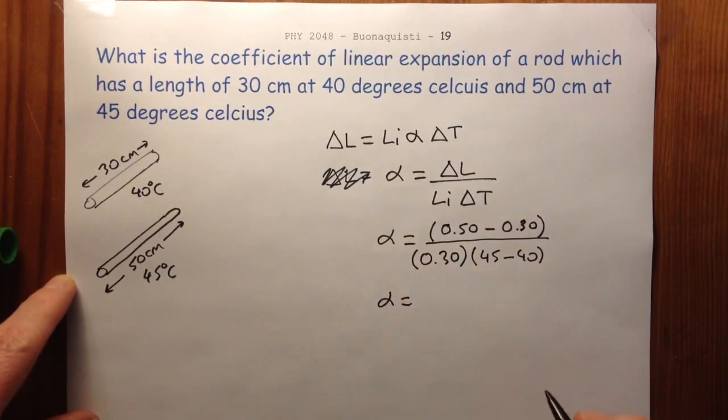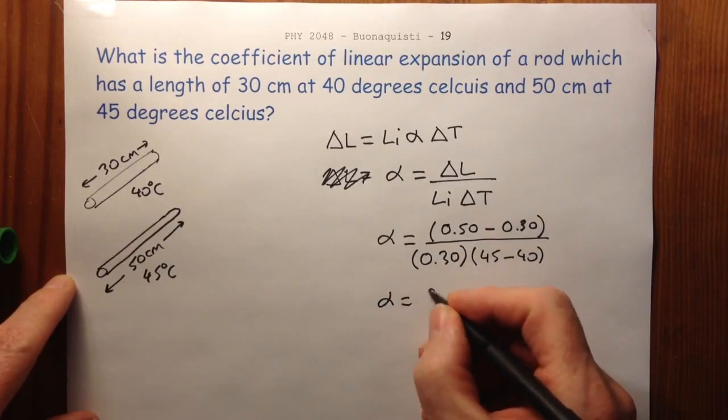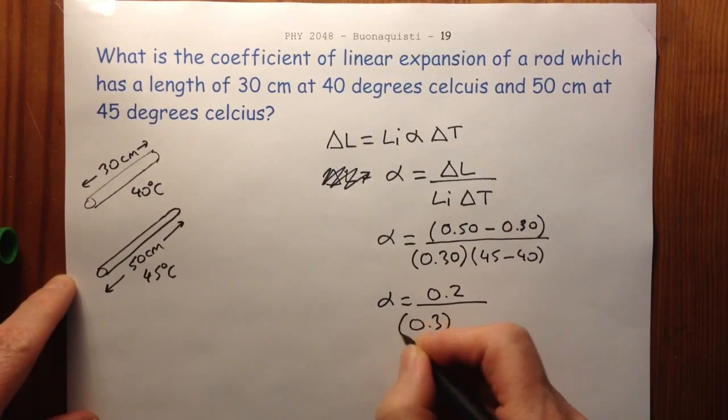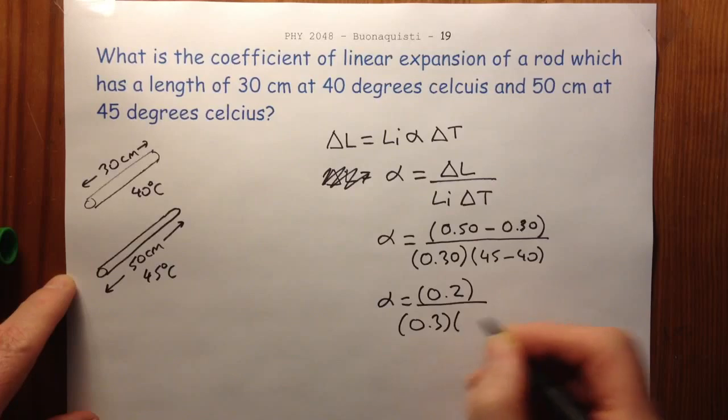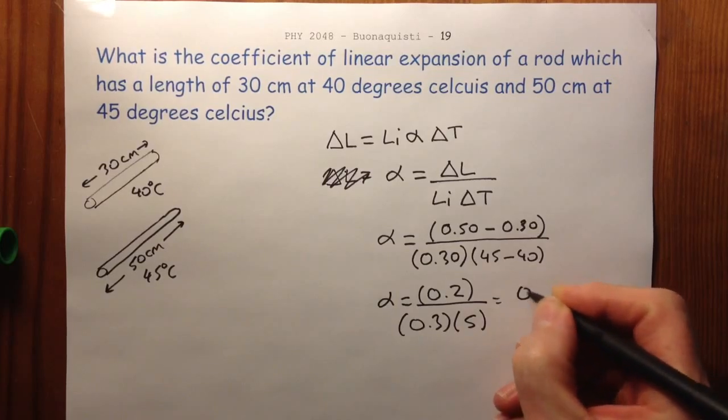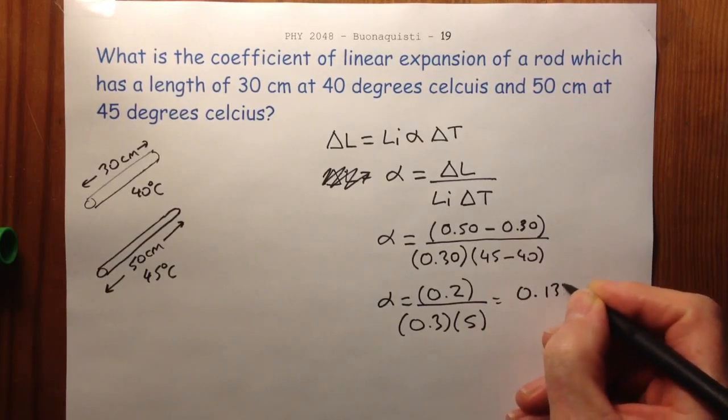So the coefficient of linear expansion equals 0.2 over 0.3 times 5. I'll get out my calculator and say 0.2 enter, divided by 0.3 enter, divided by 5 enter. And we come up with this equals 0.133.